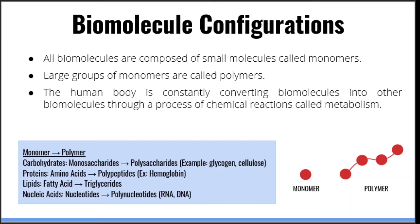For example, carbohydrates are made up of monosaccharide monomers, and depending on the type and configuration of these monomers, you get different carbohydrate polymers such as glycogen or cellulose. Proteins are made up of amino acid monomers and nucleic acids are made up of nucleotide monomers. The human body, as well as all living things, are constantly converting biomolecules into different biomolecules via a series of chemical reactions called metabolism. These reactions are essential for maintaining life, and biochemistry is essentially the study of the chemical reactions required to maintain life. So with that in mind, let's get started.